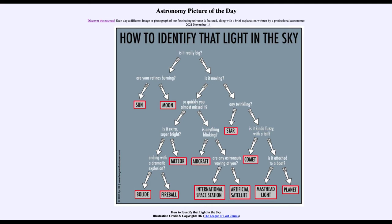Now, some of them are going to be rather obvious. If you look towards the first question, it'll ask you if it is really big, and that leads you to either the sun or the moon, as those are the two large objects that you might see. Then you can start working down to the 'is it moving?' section, and find out whether it is something like a meteor — which would be moving quickly — or something moving slowly, like some kind of aircraft or satellite.